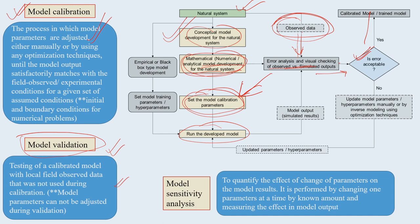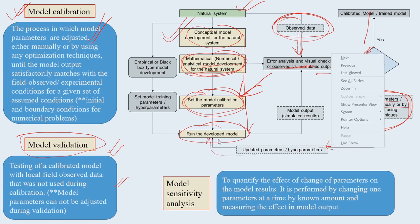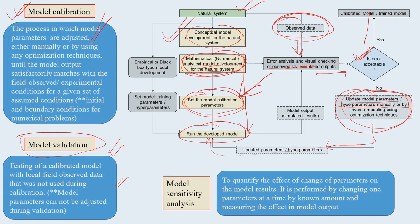If the errors are not acceptable and certain critical parameters are affected, you must update your model parameters, which is a cumbersome exercise. You have to process your model parameters manually or through inverse modeling using various optimization techniques. Though it takes time, if the error for a particular parameter observation is unacceptable, it is better to rectify it before fitting the data into the model and running with a relatively error-free dataset.